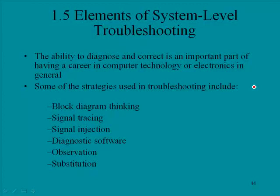We are in section 1.5, elements of system level troubleshooting. The ability to diagnose and correct is an important part of having a career in computer technology or electronics. We're going to be looking at some of the strategies used in troubleshooting, and these strategies include block diagram thinking, signal tracing, signal injection, diagnostic software, observation, and substitution.